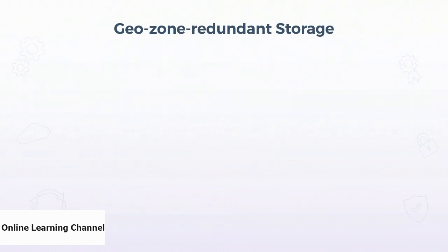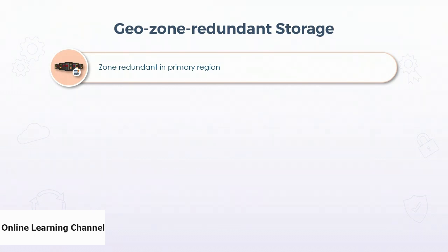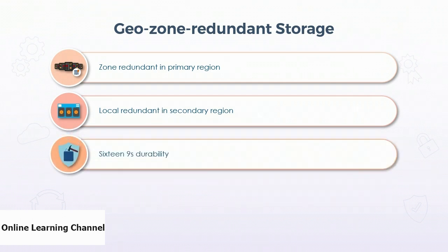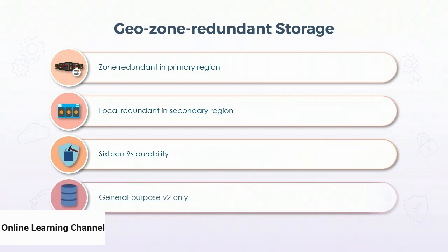Geo-zone redundant storage is an extension of geo-redundant storage and offers the highest level of data redundancy on Azure Storage. Data is written as zone redundant in the primary region, spanning three independent data centers. The data is then replicated to a secondary region where it is written as locally redundant. The result is six copies of the data across four different data centers in two different regions. This method of storage offers 16 nines of durability — approximately 10 bytes of data lost per exabyte per year — and is only available on general purpose version two accounts with limited regional support.